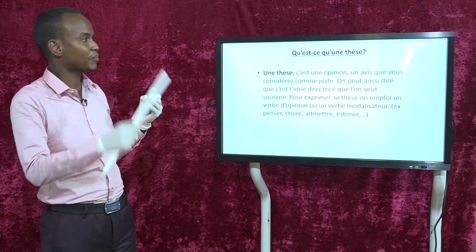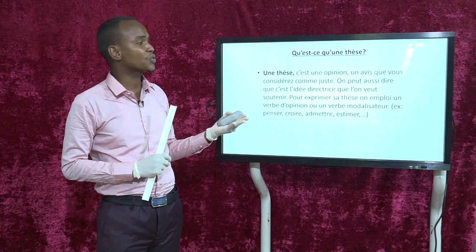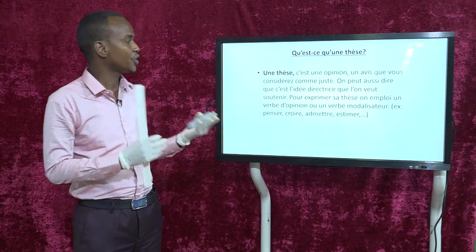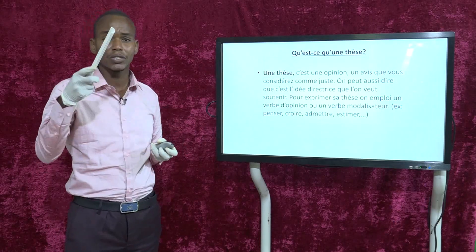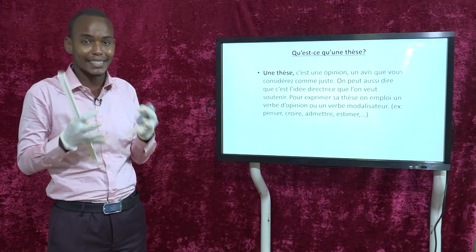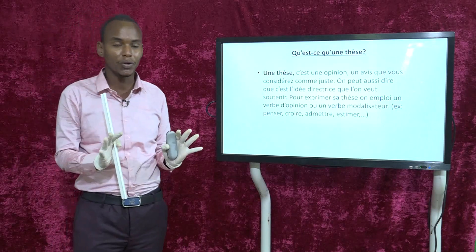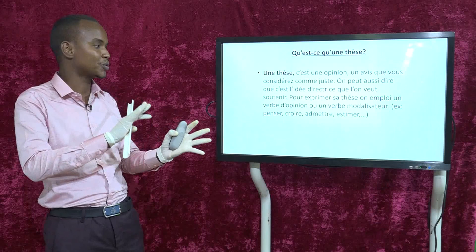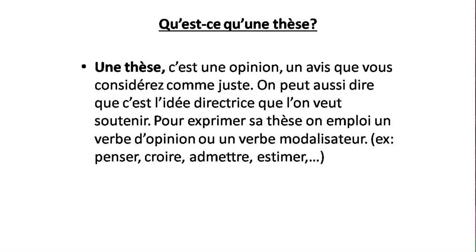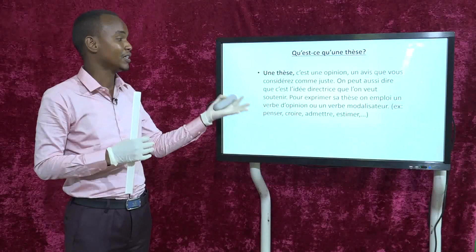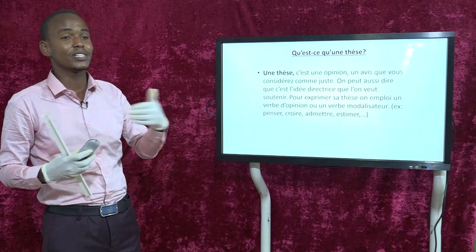Juste après le thème, nous avons en deuxième partie la thèse. La thèse, c'est une opinion — un avis que l'auteur considère comme juste, l'idée directrice que l'on veut soutenir. Pour exprimer sa thèse, on emploie un verbe d'opinion ou un verbe modalisateur — c'est la même chose. Par exemple : penser, croire, admettre. Si un élève dit « J'aimerais poursuivre mes études universitaires », il est en train de donner sa thèse.